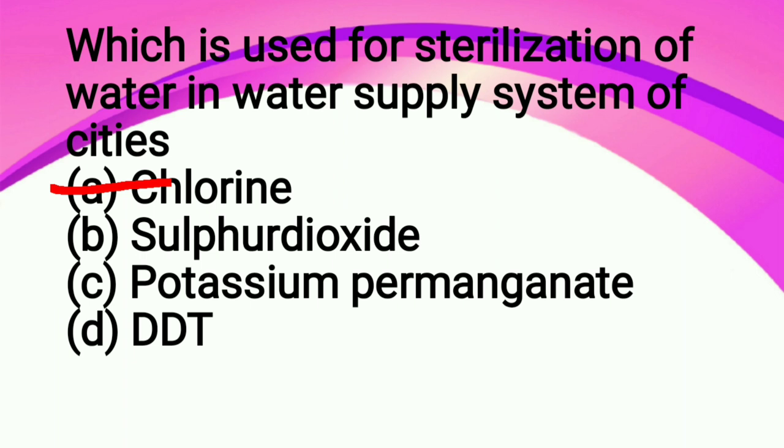In water supply systems, generally chlorine is added and chlorine works as a disinfectant. That's why when we have large volumes of water, chlorine is added to purify that water.